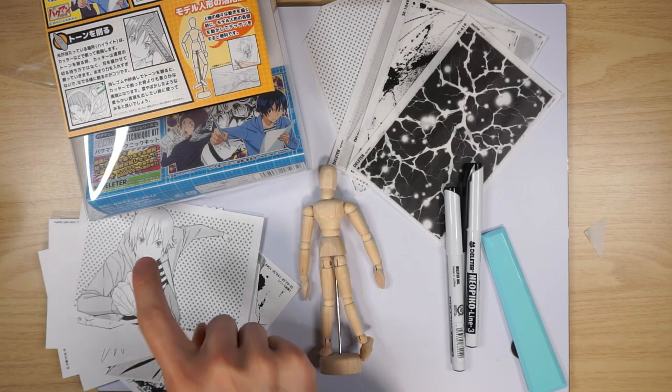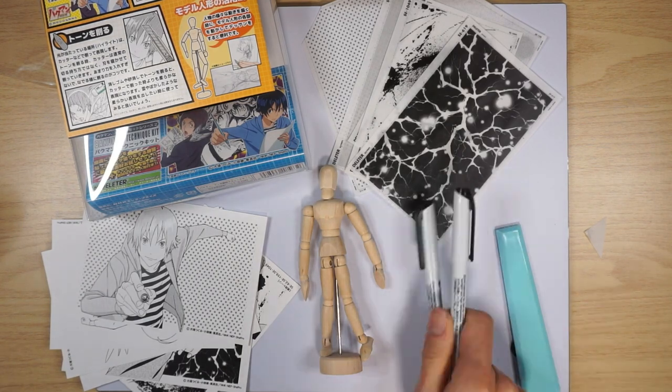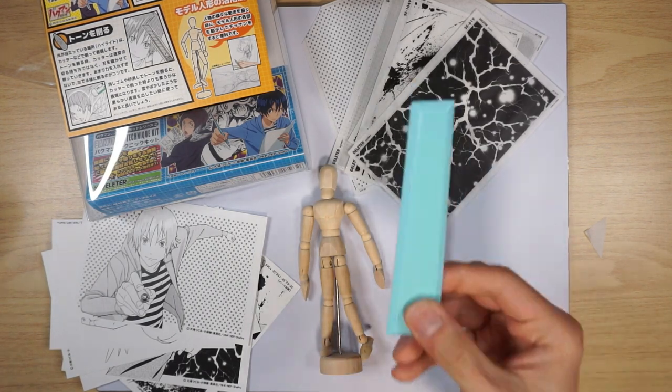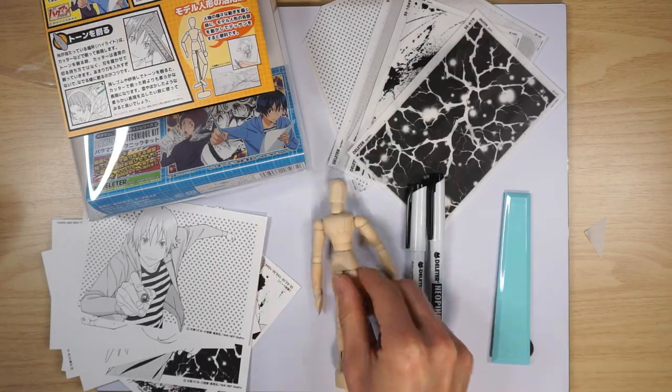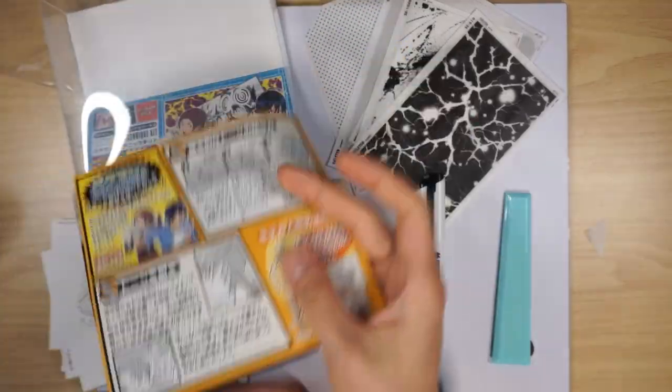But essentially, that is all for the set. The example cards, screen tones, two different kinds of pen, a brush pen and a fine liner. You've got the screen tone applicator. You've got a pose doll. And you've also got an instruction manual just in case you've never used this sort of thing before.